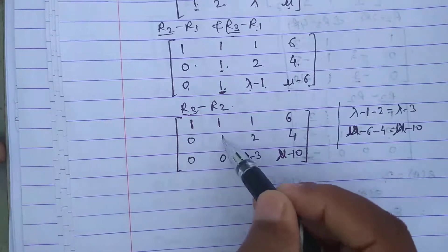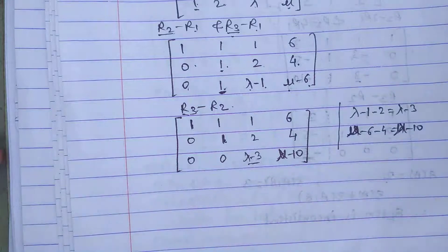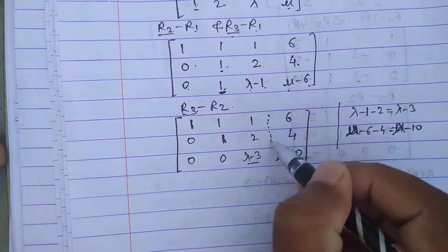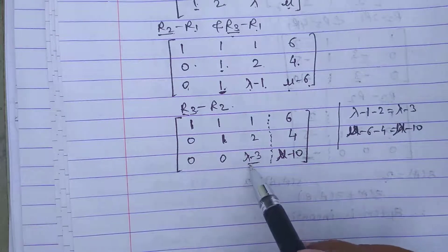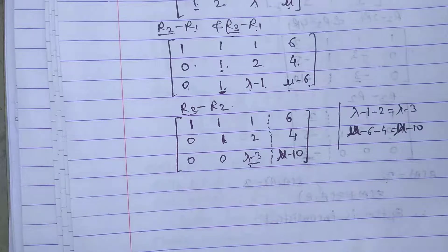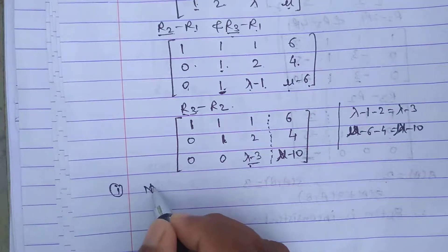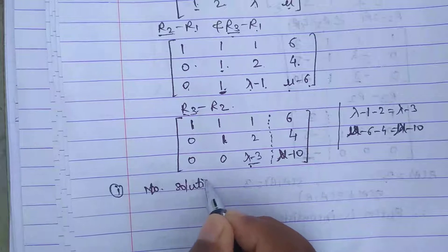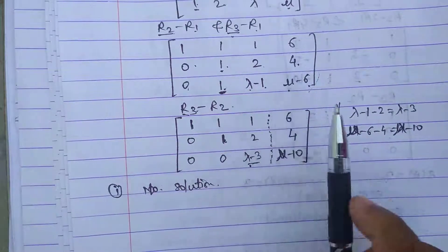The matrix is now in echelon form because in each successive row the first non-zero element is to the right of the one above. For separation of matrix A and augmented matrix [A|B] we use dots. Now we determine the values of lambda and mu for no solution, unique solution, and infinitely many solutions.